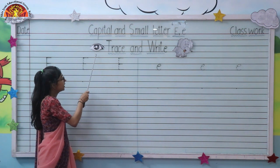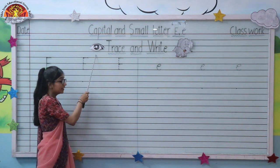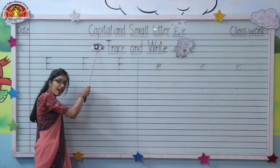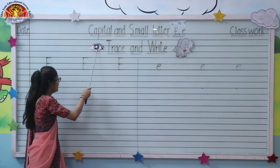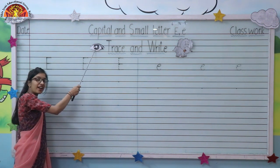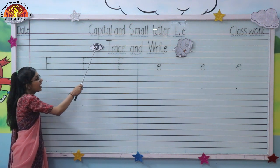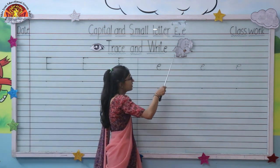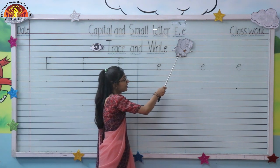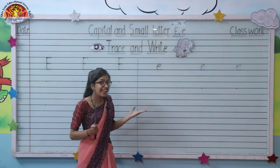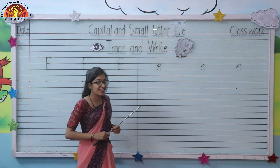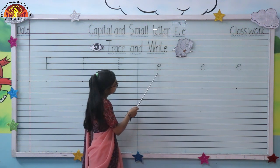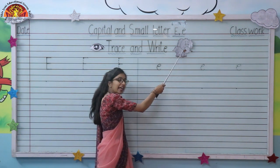Tell me, what is this? This is an I — E for I. Now tell me which picture is this? This is a picture of an elephant — E for elephant.